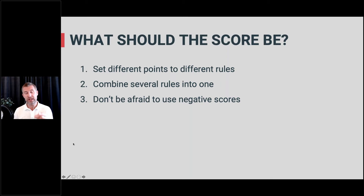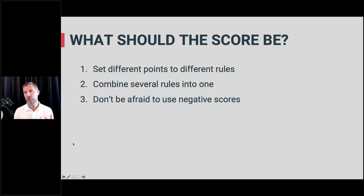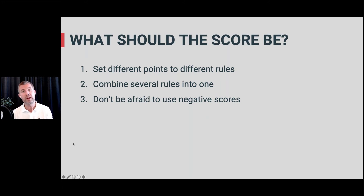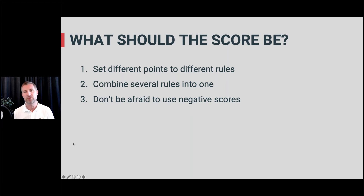Don't be afraid of using negative scores. You want to add points for things relevant and close to a sale, but also deduct points for things you deem not important or not relevant for salespeople. For example, if there are countries you're not shipping to, you'd remove points from people from those countries. Or if you have a lot of traffic from students or people applying for jobs, you may want to assign negative scores to the title 'student' or people visiting your careers page — not relevant for sales in the lead perspective. Think about how negative scores help the right people bubble to the top.